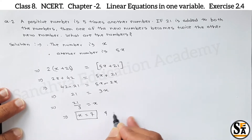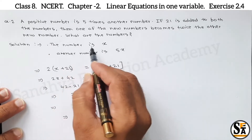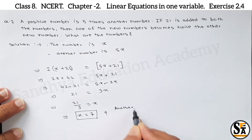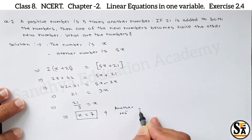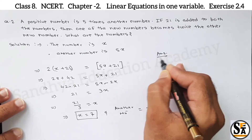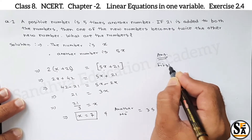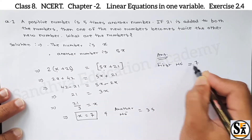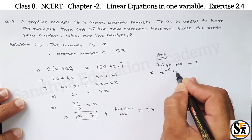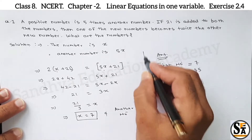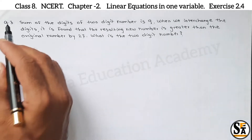Transferring: 21 by 3 equals x, so value of x will be 7. The first number is x, so the other number will be 5x, that is 5 times 7, which is 35. So our answers are: first number is 7 and second number is equal to 35. This is our final answer.